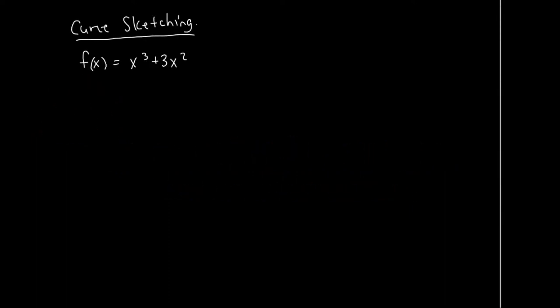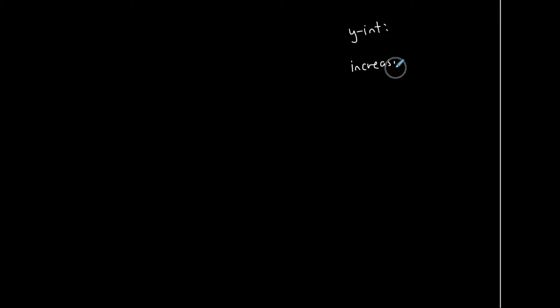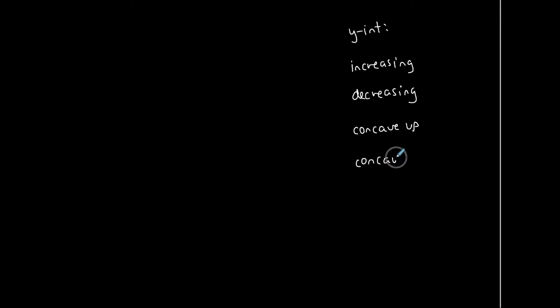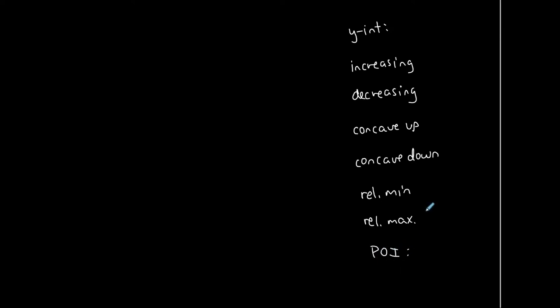This is going to be a quick video with just one example of curve sketching from calculus, using the function f(x) = x³ + 3x². We're going to gather the following information: the y-intercept, intervals where the function is increasing, intervals where the function is decreasing, intervals where the function is concave up, intervals where the function is concave down, special points such as a relative min or relative maximum, and points of inflection.